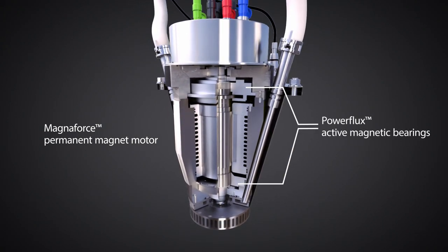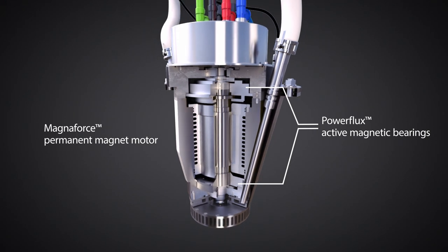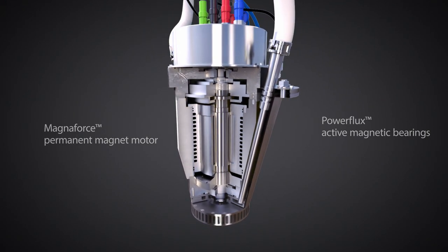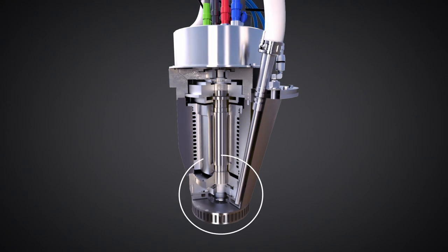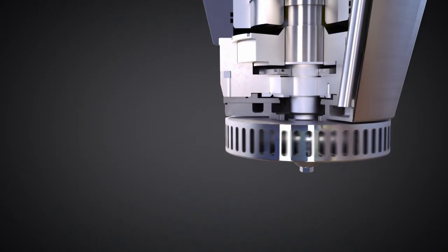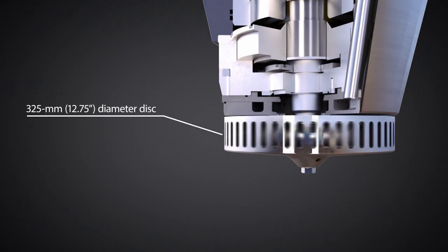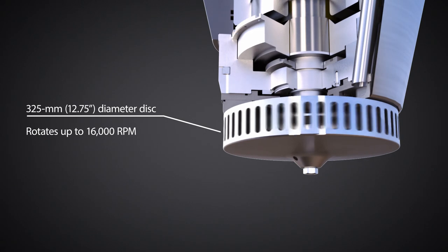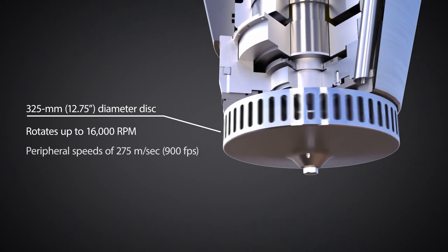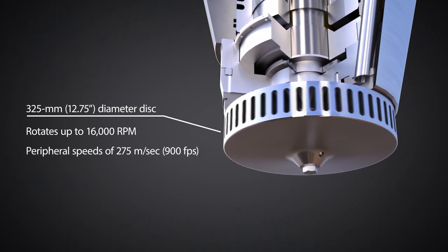This combination of technology results in an extremely compact spray machine that is capable of high speeds and requires no lubrication. The non-contact magnetic bearings enable a 325-millimeter disc to rotate up to 16,000 RPM, resulting in peripheral disc speeds of 275 meters per second.